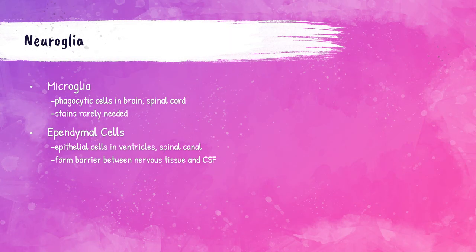Microglia are phagocytic cells present in both the brain and spinal cord; these are not typically stained. Ependymal cells are epithelial cells present in the lining of ventricles and the spinal cord. They help form a barrier between the nervous tissue and the cerebrospinal fluid.